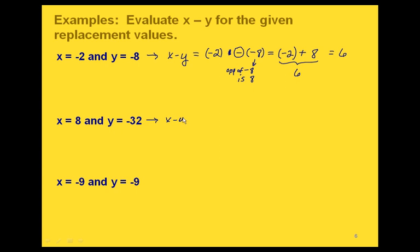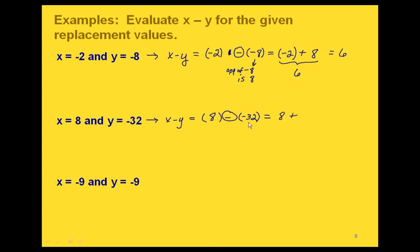For this one, x equals 8 and y equals negative 32. In the first parentheses we put 8, and we're replacing y with negative 32. We can drop the parentheses around 8 since nothing else is needed inside. We rewrite the subtraction as plus the opposite of negative 32, which is positive 32. So we have 8 plus 32, and we can just add those together to get 40.